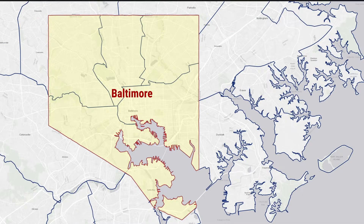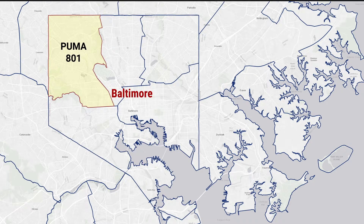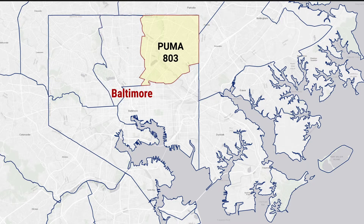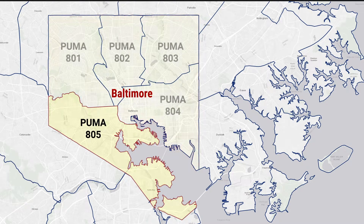For example, using the 2010 PUMA boundaries, the city of Baltimore, Maryland is broken up into five PUMAs: 801, 802, 803, 804, and 805. By combining these PUMAs together, you can collect data for Baltimore, Maryland.